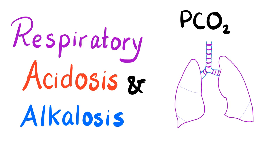Hey guys, it's Medicosis Perfectionelis. We resume our discussion about pulmonology topics. In the previous video, we talked about the alveolar arterial gradient, also known as the AA gradient. Today, we'll talk about respiratory acidosis and alkalosis. Lots of carbon dioxide in the system, you get acidosis. Less carbon dioxide in the system, and you get alkalosis. With that being said, let's get started.